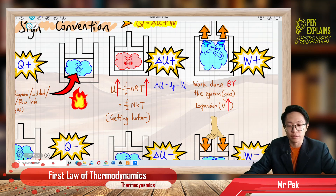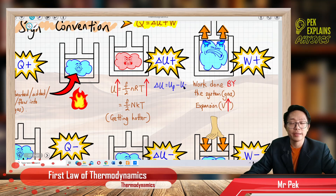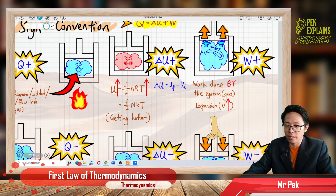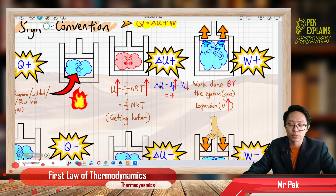When is delta U positive? Delta U positive means the internal energy increases, or temperature increases. When internal energy increases, the final internal energy is higher than the initial internal energy — a big value minus a small value — so we get a positive value for delta U.